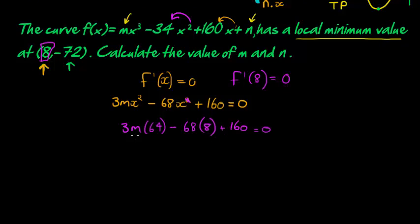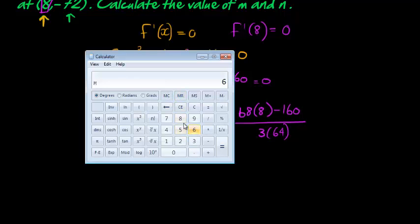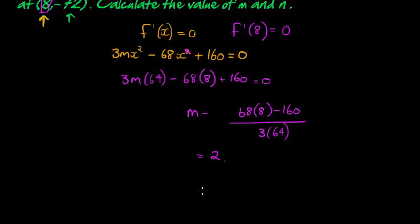And now, we need to solve for m. So, m would equal (68 times 8 minus 160) divided by 3, and divided by 64. So, what do we get? I'll just use the calculator for this one. 68 times 8 minus 160 is equal to 384, divided by 3 is equal to 128, divided by 64 is equal to 2. So, we get that m is simply equal to 2.